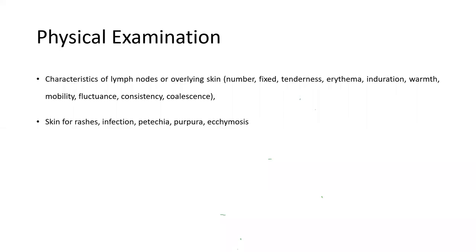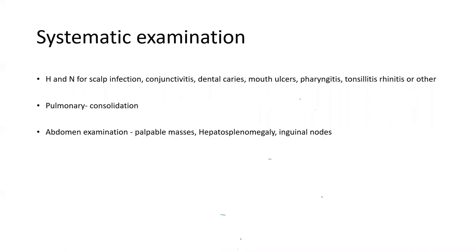On physical examination, note node characteristics: number, whether fixed or mobile, tenderness, induration, warmth of overlying skin, fluctuance, and consistency. Evaluate skin for rashes, infections, petechiae, purpura, or ecchymoses. Systematically examine head and neck for scalp infections, conjunctivitis, dental caries, mouth ulcers, pharyngitis, tonsillitis, and rhinitis. Perform pulmonary examination to check for consolidation. Abdominal examination to palpate masses, hepatosplenomegaly, and enlarged inguinal nodes.